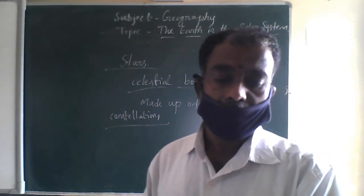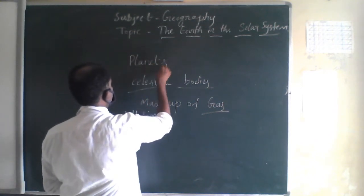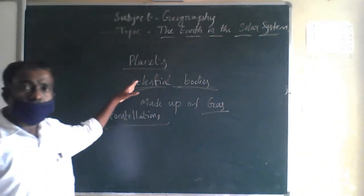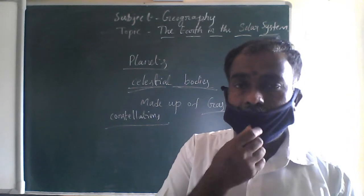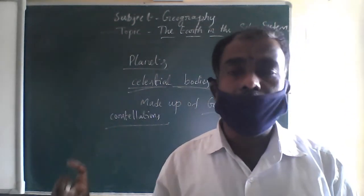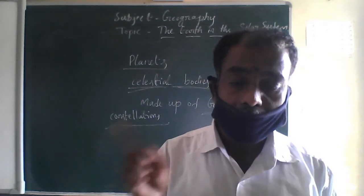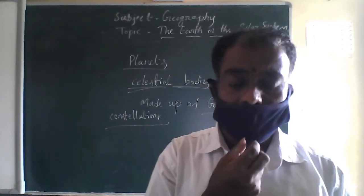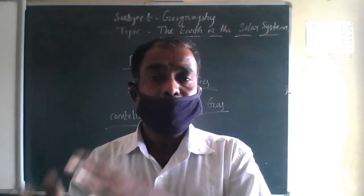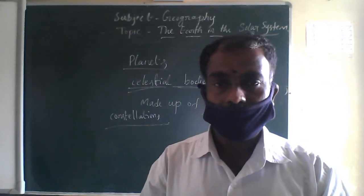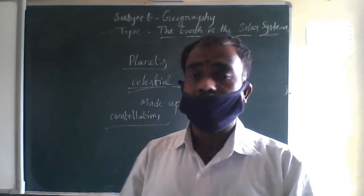Now let us come to the planets. The celestial bodies — please keep in mind — these planets are also made up of gas, but these celestial bodies do not have their own heat and light. Stars are producing their own heat and light, but planets are lit by the light of the stars. They are receiving light — they are not producing their own — and those celestial bodies we used to call planets.